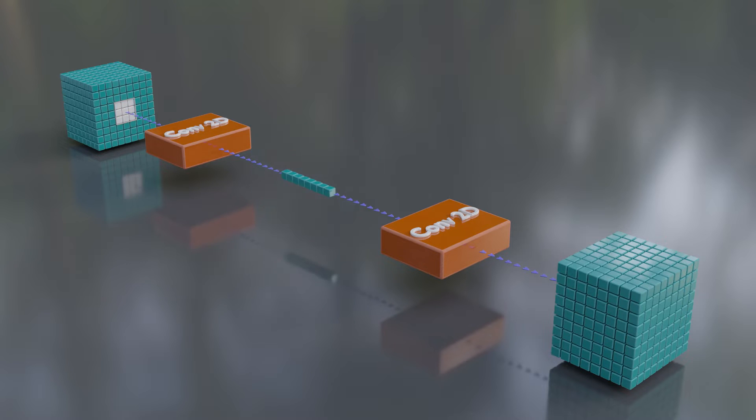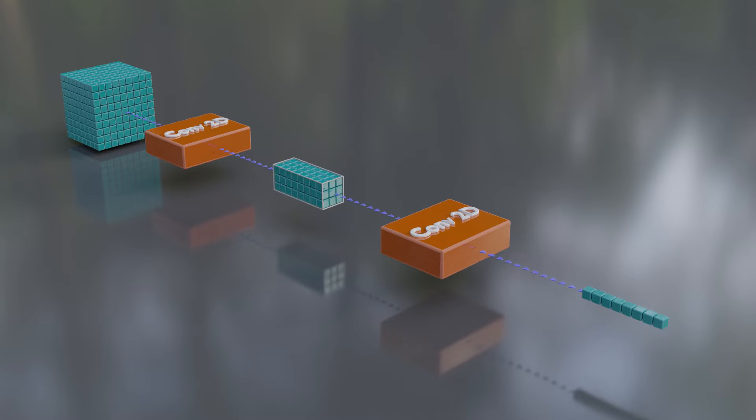Each pixel in the first layer can only see a 3 by 3 patch of the input. But the second layer sees a 3 by 3 patch of pixels in the first layer. And that 3 by 3 patch in the first layer can see a combined area of 5 by 5 in the input image. We can say that the second layer has a receptive field of 5 by 5.